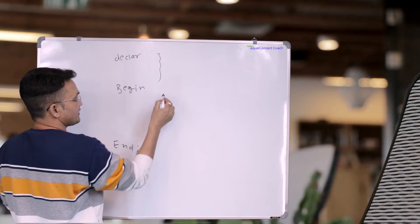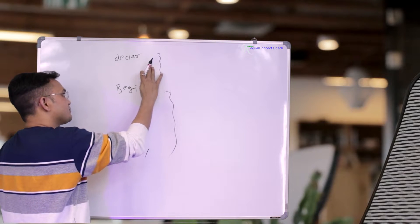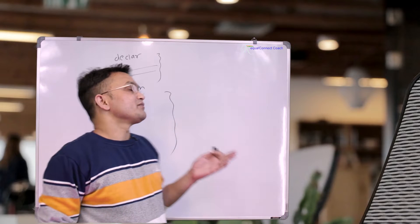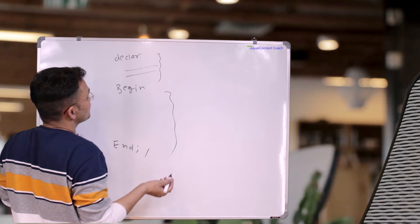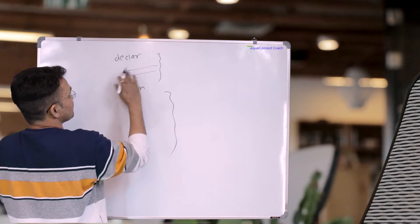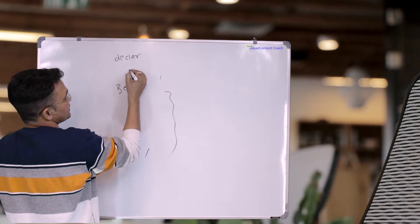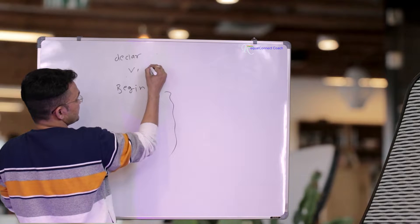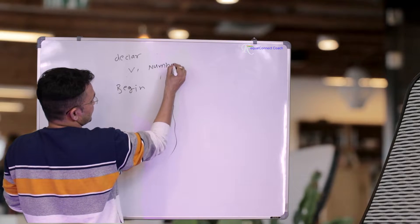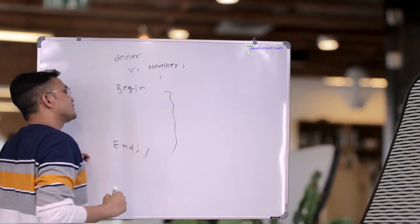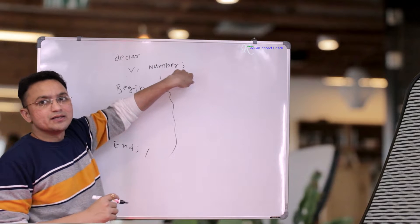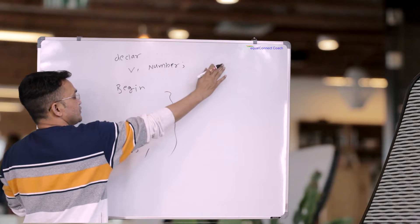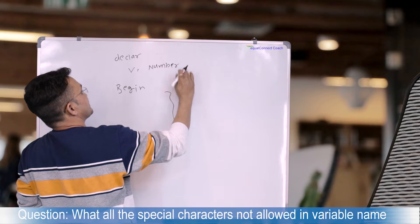This is the declaration part and this is the execution part. The declaration part is where you declare variables, cursors, or whatever you want to declare. So if I want to declare a number type variable, I write the variable name — let's say v1 — and then give it a data type of number, followed by a semicolon to end the statement.